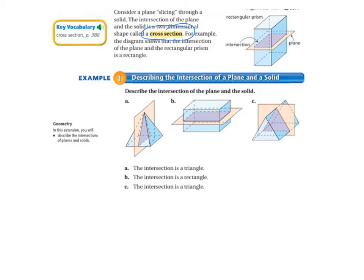Example 1, describing the intersection of a plane and a solid. Describe the intersection of the plane and the solid. Letter A, if you look at how the plane is intersecting the solid, it is going to be a triangle. So you can see the blue area is intersected by the plane and that leaves the purple area, which is a triangle. So when you describe it, all you have to do is tell what shape it is.